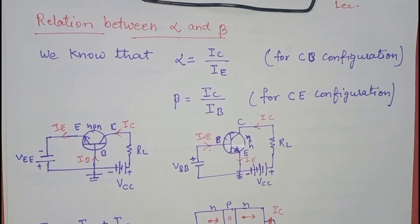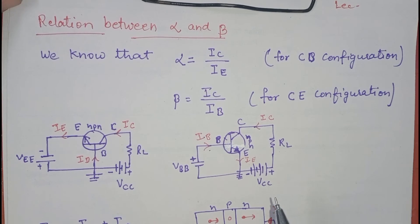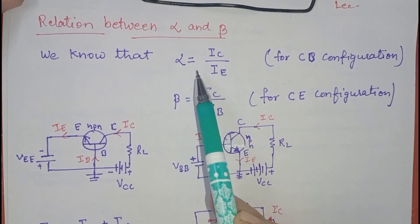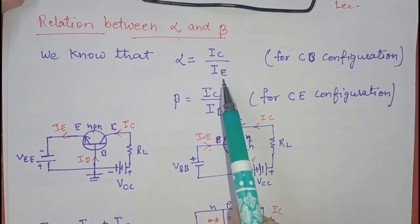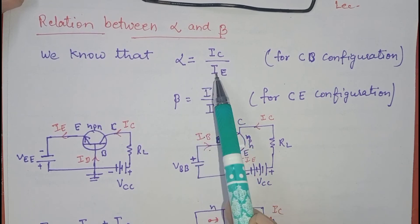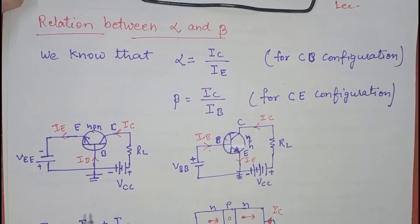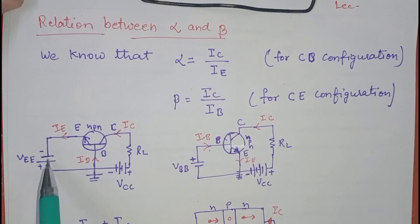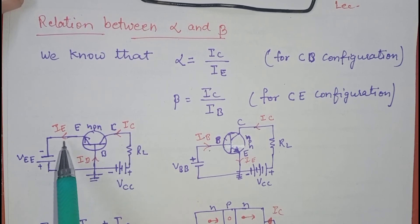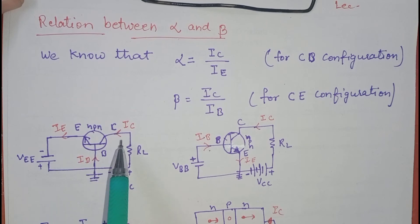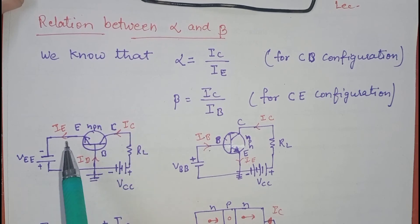Alpha, beta and gamma are the current amplification factors for different configurations of a transistor. Alpha is IC upon IE — output current upon input current. This is the current amplification factor for the common base configuration. In the common base circuit diagram, IC is the output current and IE is the input current, so the current amplification factor is IC upon IE.